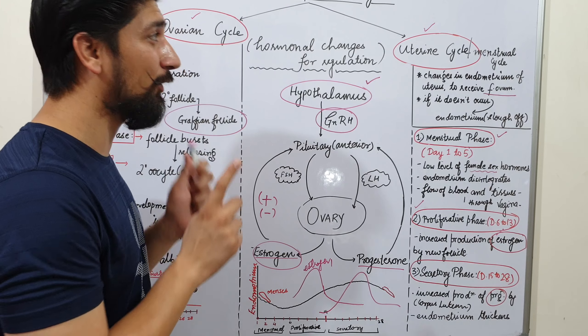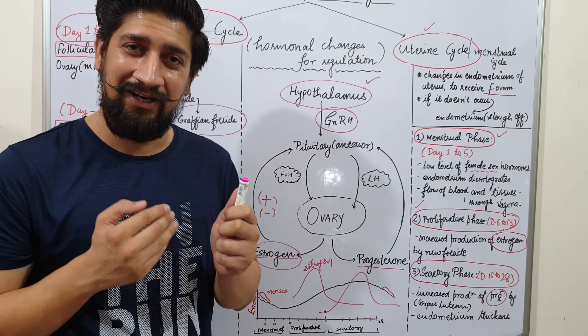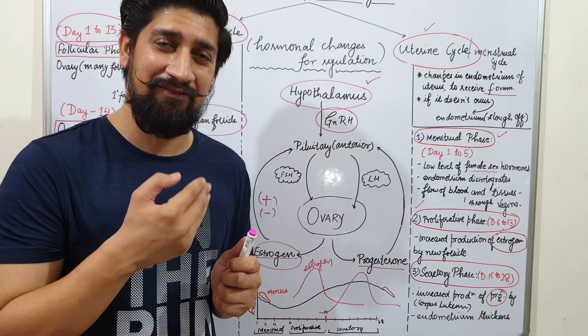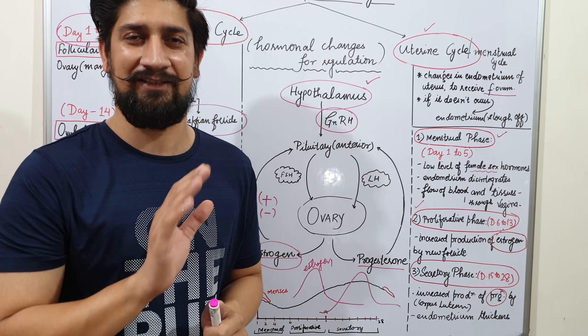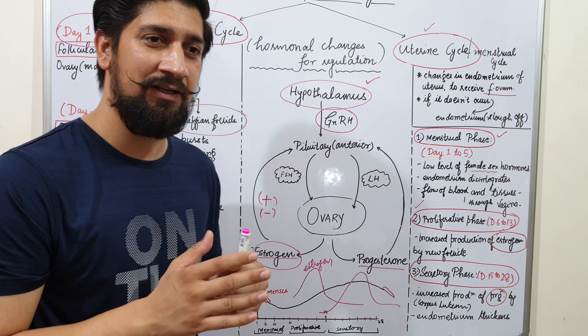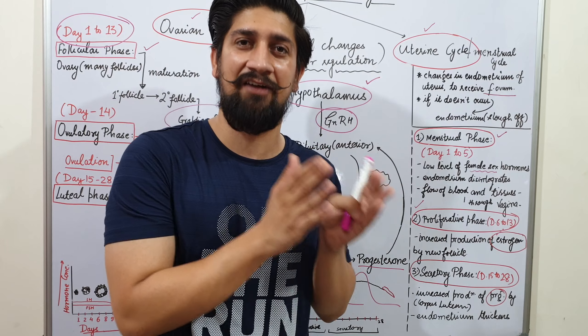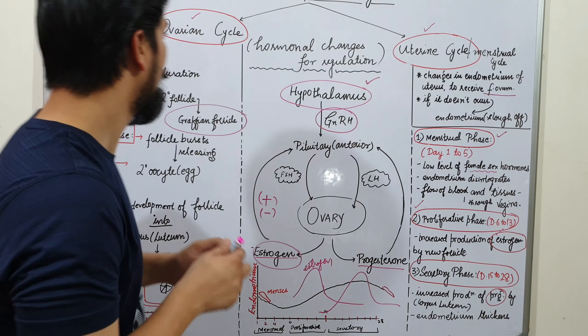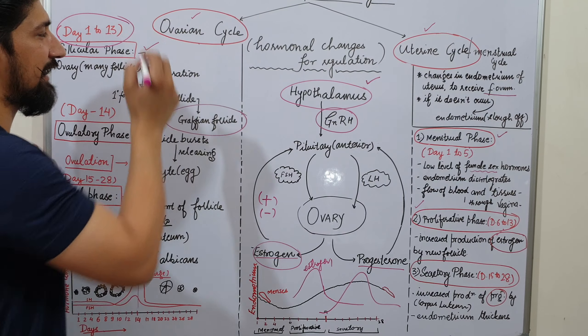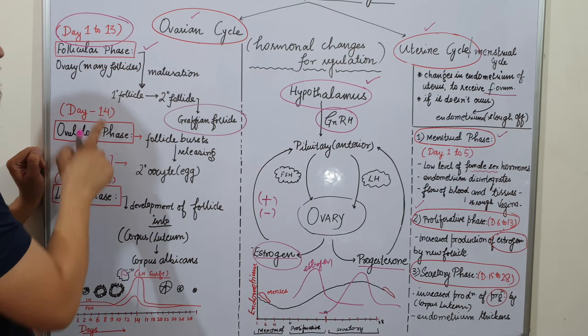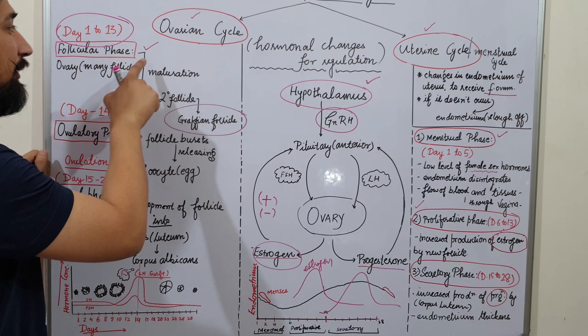The ovarian cycle and uterine cycle are concurrent — events are happening simultaneously. We should not be confused about which event happens first. To simplify: we look at changes happening inside the ovaries and changes happening inside the uterus separately. The ovarian cycle has three parts: the follicular phase, the ovulatory phase, and the luteal phase.